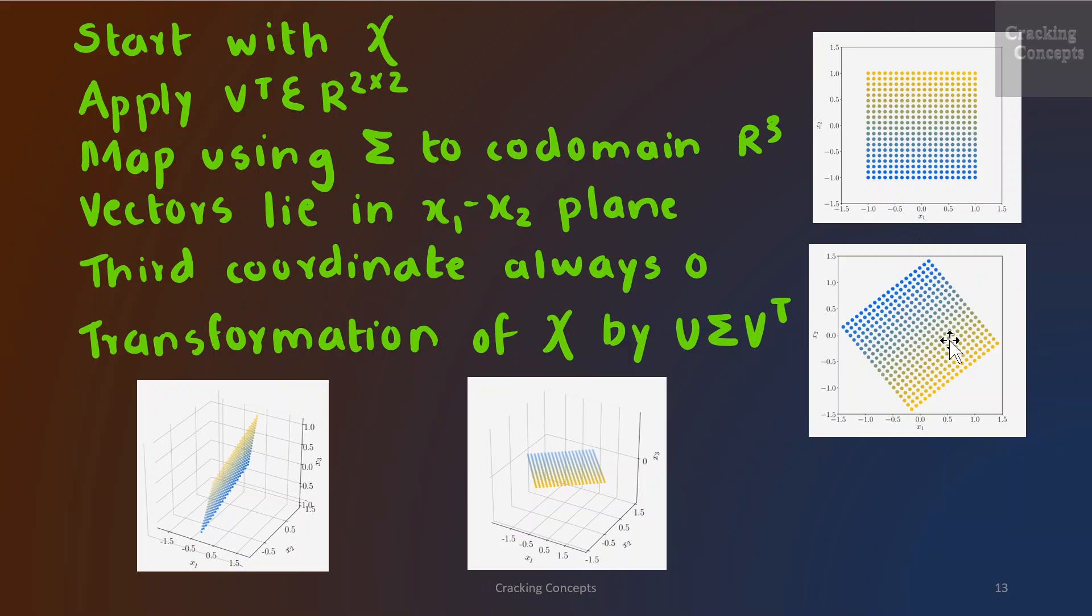We now map these vectors using the singular value matrix Σ to the codomain R^3. Note that all the vectors lie in the x1-x2 plane. The third coordinate is always 0. The vectors in the x1-x2 plane have been stretched by the singular values.